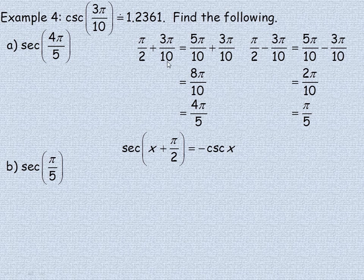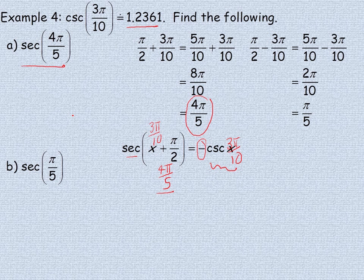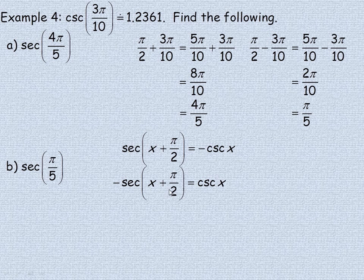Back to part A: adding 3 pi over 10 to pi over 2 gives 4 pi over 5. The x angle is 3 pi over 10. Using the identity, the secant of x plus pi over 2 equals the negative cosecant of x. So the secant of 4 pi over 5 equals the negative of the cosecant of 3 pi over 10, which means it equals approximately negative 1.2361.